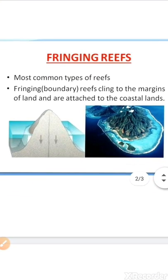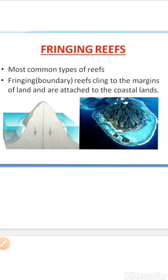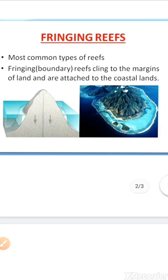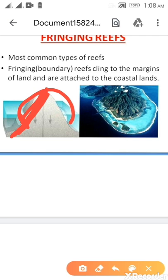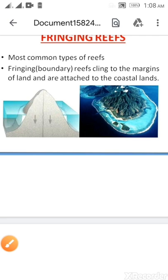Fringing reefs are reefs that grow directly from a shore. This is the island, and this is the seashore — this is the leeward side, which is more gentle, and here they will grow. So fringing reefs are reefs that grow directly from a seashore, located very close to the land, and often form a shallow lagoon between the beach and the main body of the reef.